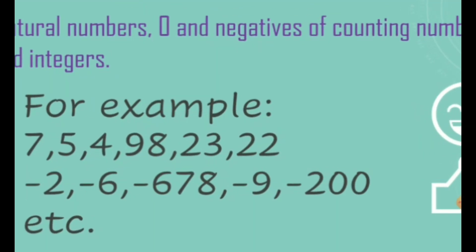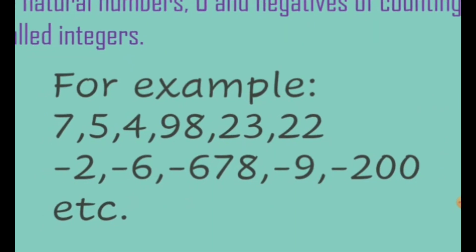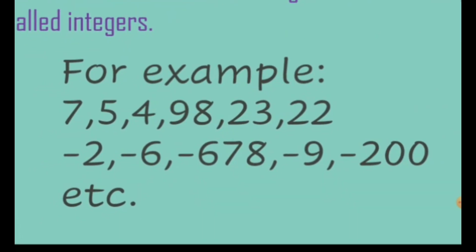Now let's read some examples so that it will be easy for you to learn integers. At the positive numbers, here it can be any number like 7, 5, 4, 98, 2000, 300, any number.